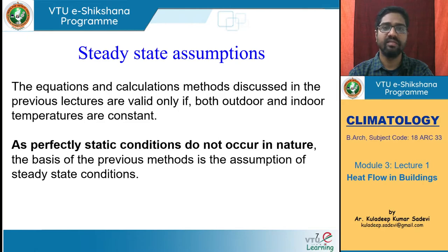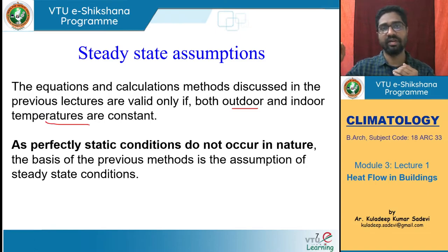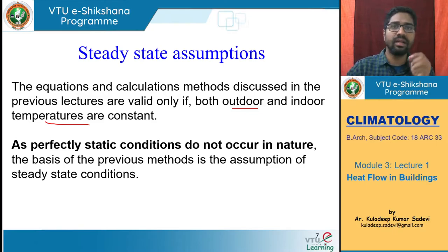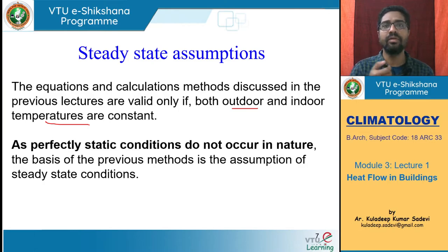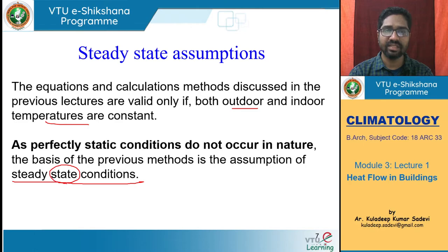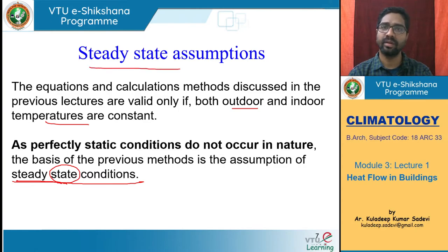In steady state assumptions, the equations and calculations from previous lectures apply only when both outdoor and indoor temperatures are constant. For example, outdoor is 35°C and indoor is 24°C — we assume these remain fixed for the duration of our calculation. This is not the general case in reality because outdoor temperatures keep fluctuating and indoor temperatures also vary unless maintained by air conditioning. Perfectly static conditions do not occur in nature; this is why it is called steady state assumption.